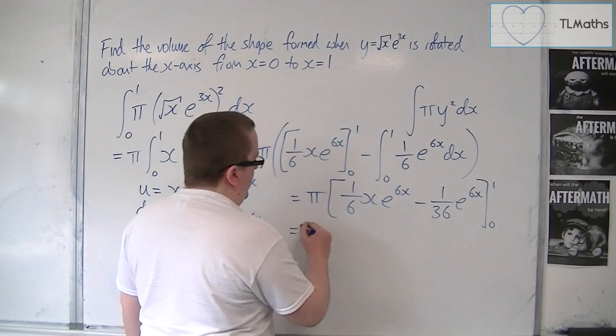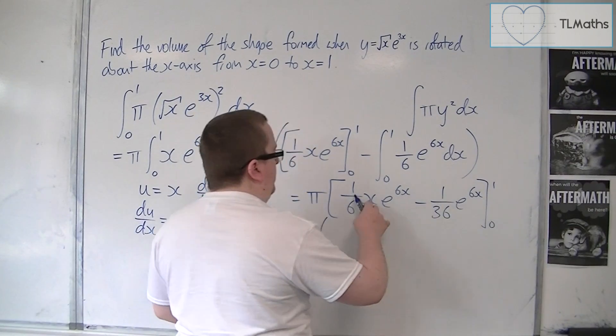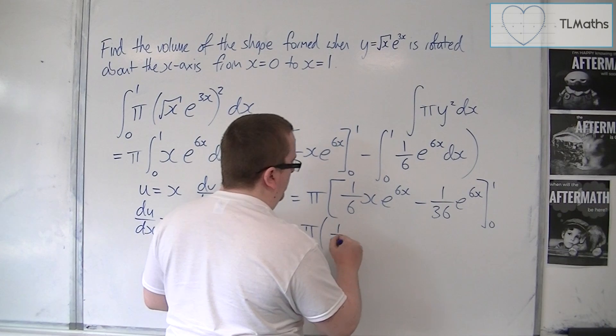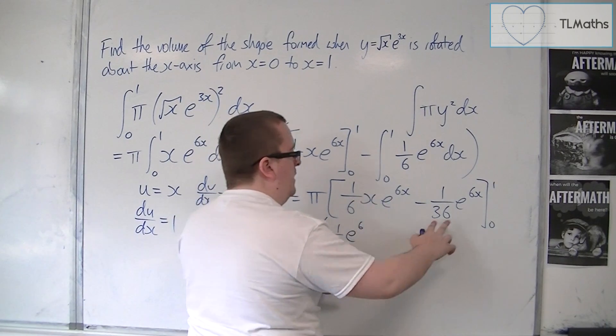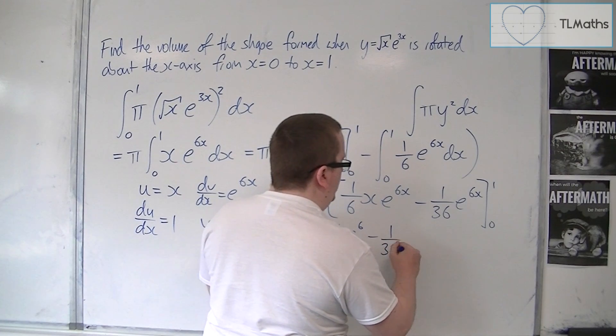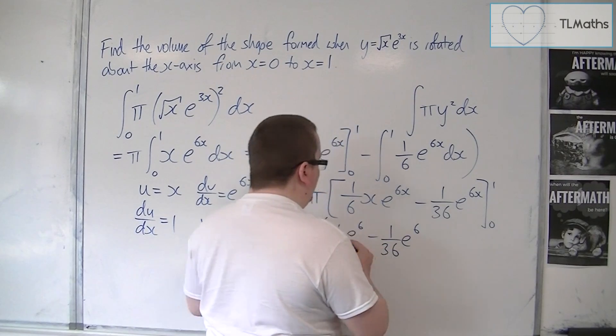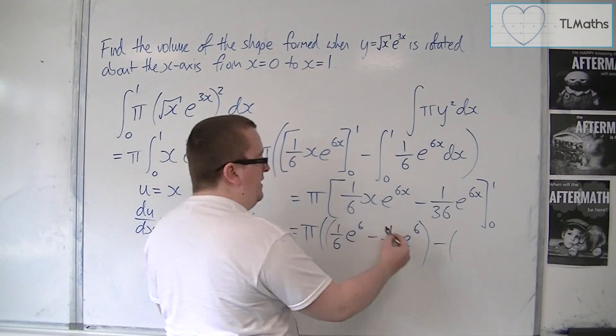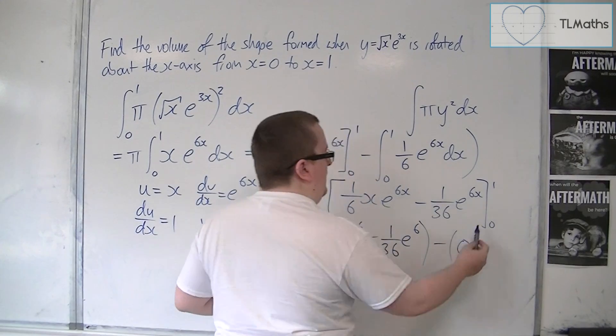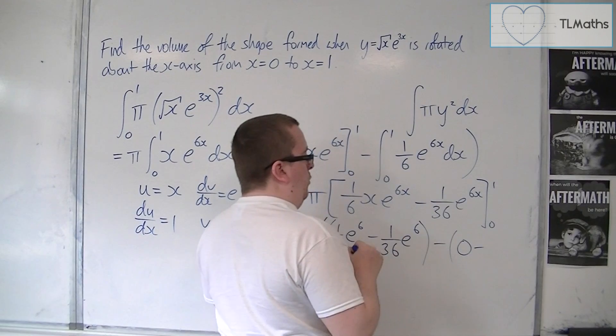So, if we leave the pi outside for a moment, and we're going to substitute in 1, so we're going to get 1 sixth e to the 6. We're going to get a take away 1 over 36 e to the 6 from there, and then we need to substitute in 0. So, substituting 0 into that will be 0, and then substituting 0 into that will just be minus 1 over 36.